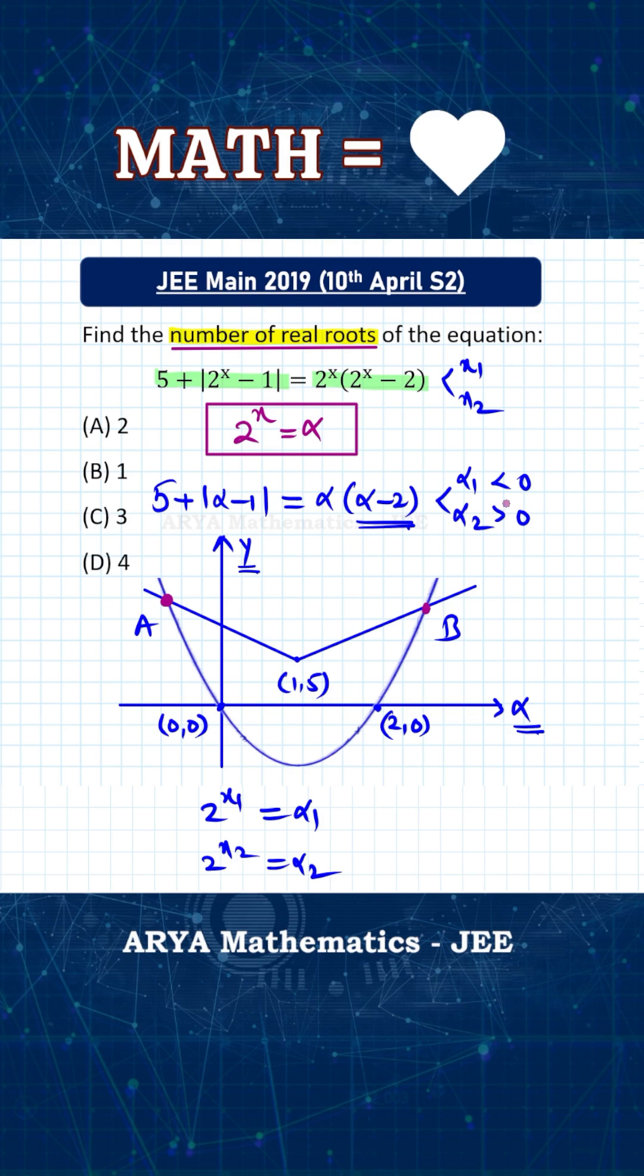Now, because alpha 1 is a negative number, we cannot get any real roots for this equation. There is no value of x1 for which 2 raised to x1 will be alpha 1 because alpha 1 is negative. And 2 raised to x2, this is alpha 2. So from here, we will get some real value of x2. So for this original equation in x, there will be only one real root and hence the right answer is option B.